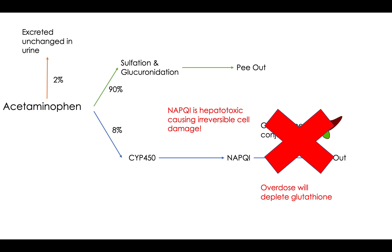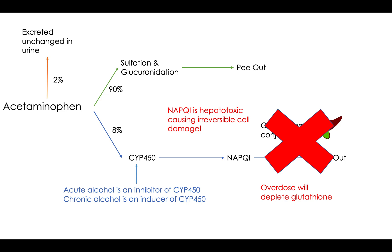Another concept that was tested a lot on UWorld — and I got multiple questions on — was what happens if you overdose on acetaminophen but you were also drinking alcohol. If you had acute alcohol in your system — so you're not an alcoholic, you just decided to overdose on acetaminophen and drink some alcohol with it — acute alcohol is actually an inhibitor of CYP450. So it would be cytoprotective against this pathway, because inhibiting CYP450 forces all of the acetaminophen to go through the other two pathways of sulfonization, glucuronidation, or being excreted unchanged in the urine.